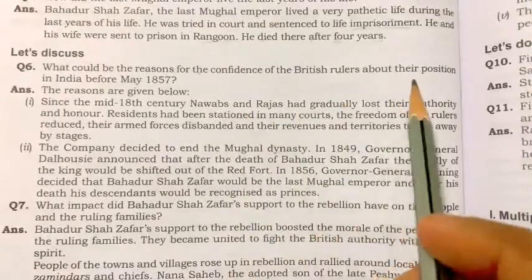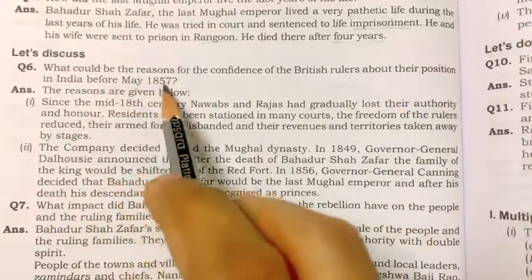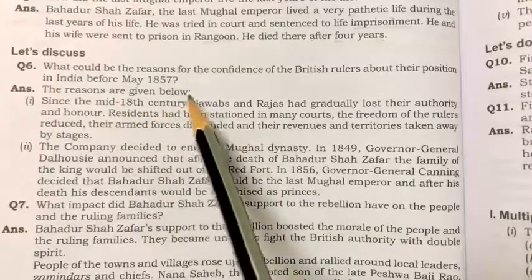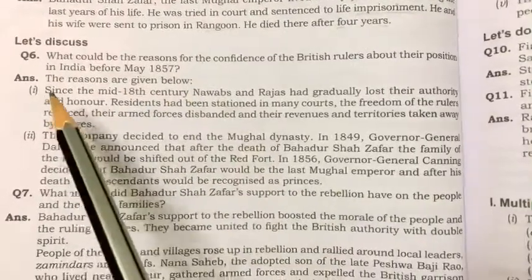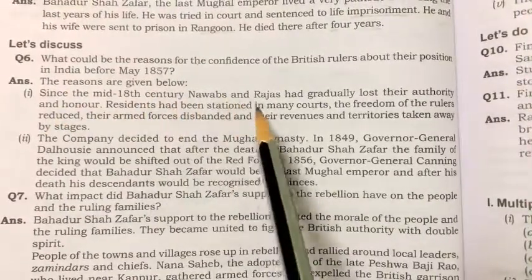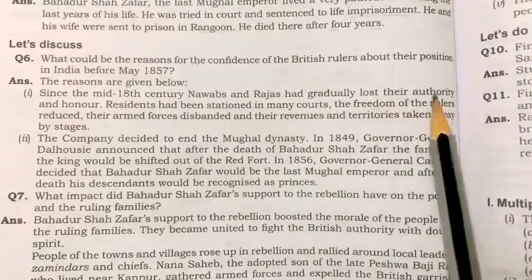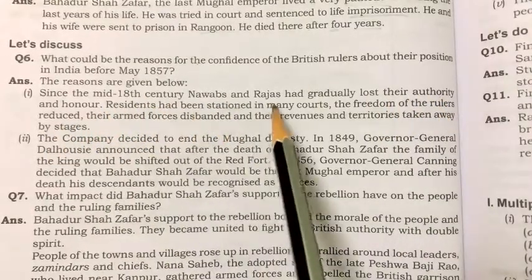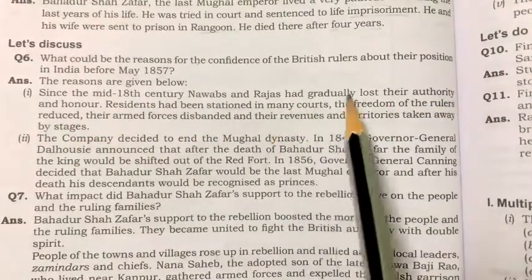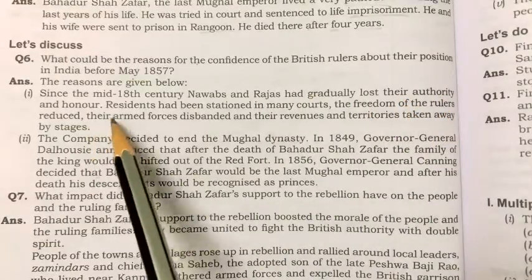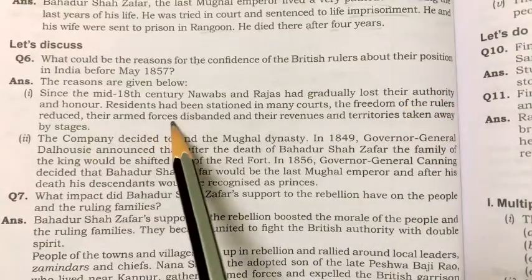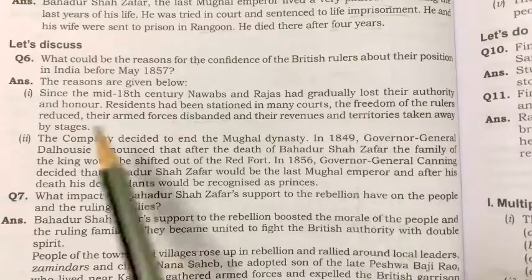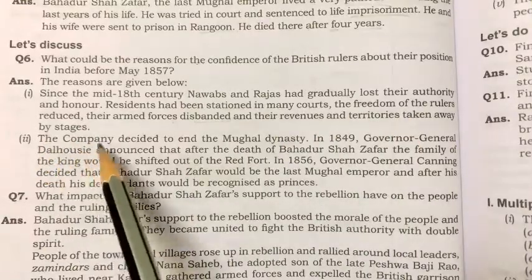What could be the reason for the confidence of the British rulers about their position in India before May 1857? Since the mid-18th century, nawabs and rajas had gradually lost their authority and honor. Residents had been stationed in many courts, the freedom of the rulers was reduced, their armed forces were disbanded, and their revenues and territories were taken away by stages.